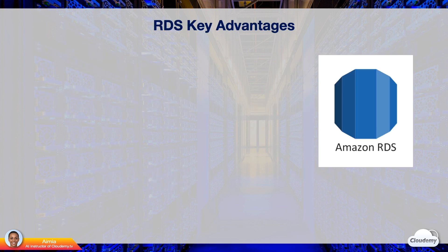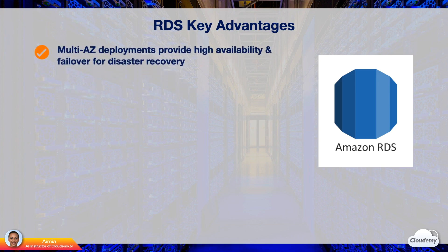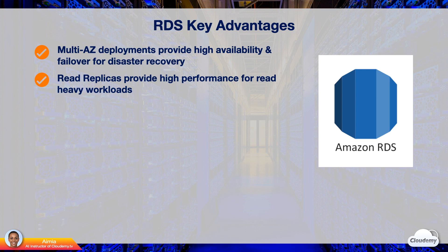Amazon RDS has key advantages over standard relational databases. RDS provides high availability and failover support using multi-AZ deployments. In a multi-AZ deployment, Amazon RDS automatically provisions and maintains a synchronous standby replica in a different availability zone. In the event of a planned or unplanned outage, Amazon RDS automatically switches to the standby replica in another availability zone. RDS also uses built-in replication to create read replicas from a source DB instance. Updates made to the source DB instance are asynchronously copied to the read replica, reducing load on the primary and allowing you to elastically scale out for read-heavy workloads.